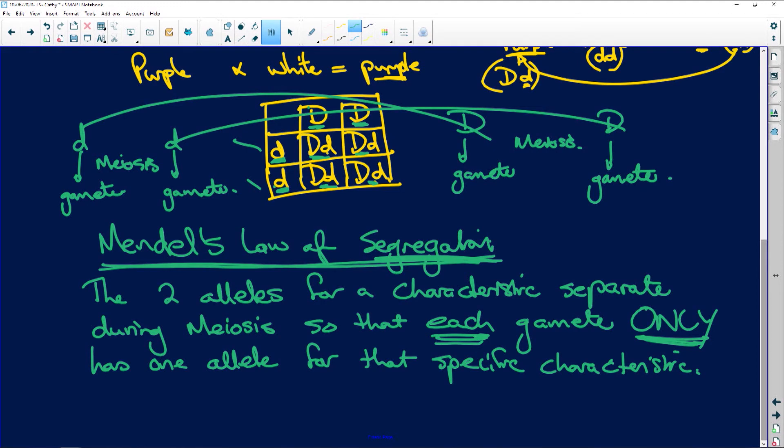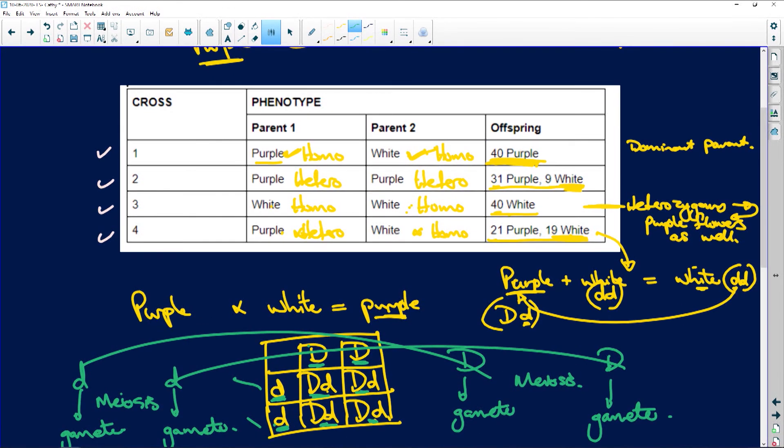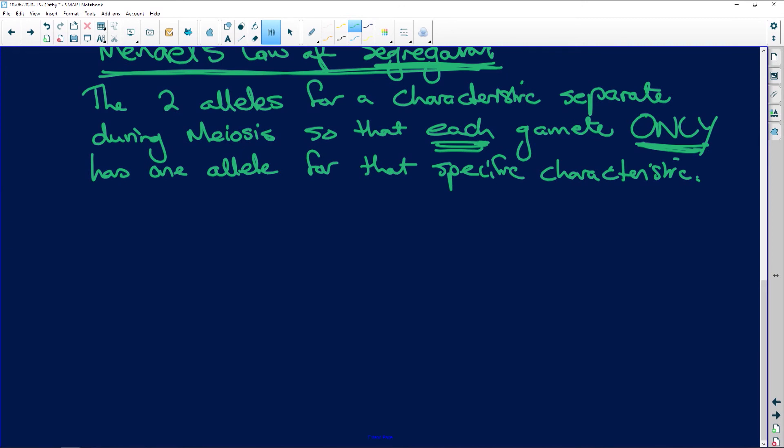So now, next question. Says here, use a genetic cross to show how the crossing of two purple flowering plants can produce white offspring as in cross two. So let's just quickly check cross two. In cross two here, we're going to have purple flower and purple flower. And they want to know how white ones ended up. So we have to do this cross. So I'm going to show you step by step where your marks come from.